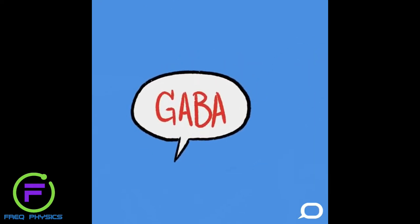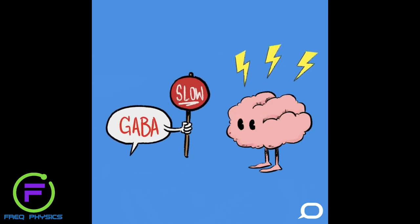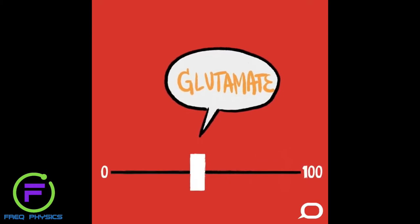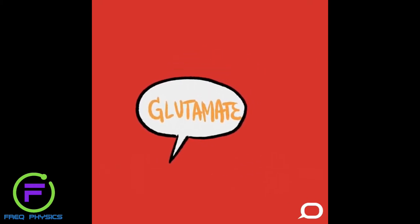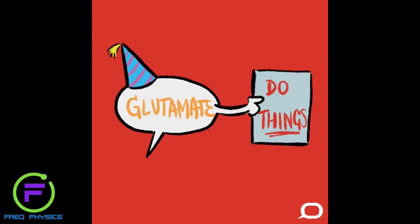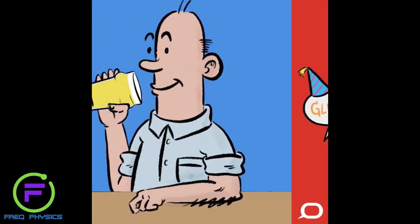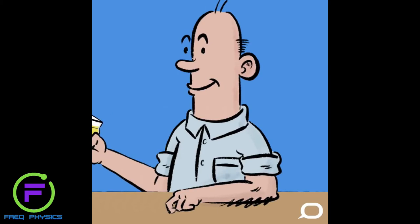Ethanol also reduces the amount of glutamate in the brain, and glutamate is an excitatory neurotransmitter, so reducing its effect also slows the body down. Both of these effects are why, after a number of drinks, we might have difficulty speaking and poor coordination.